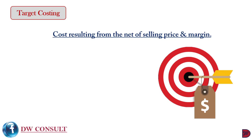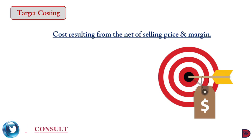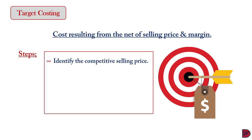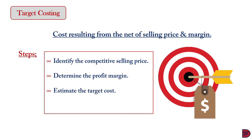Target costing is particularly essential when a new product is to be launched, especially when competing products are already trading at a particular price. The steps are: first, identify the competitive prevailing selling price via checking competitor prices or market research. Second, calculate the desired profit margin and subtract it from the target selling price. The resulting figure is the target cost. Then, estimate the actual cost of the product to see if it matches the target cost.